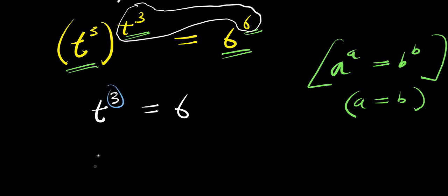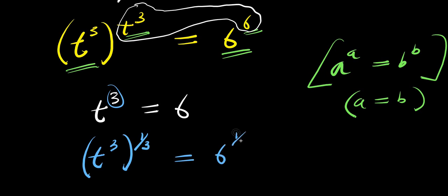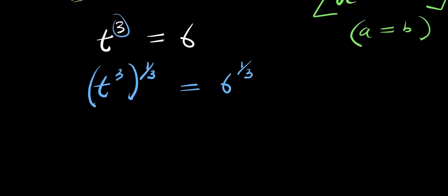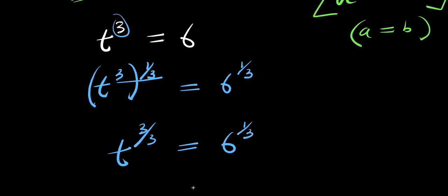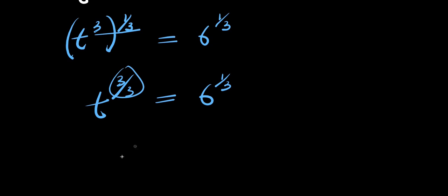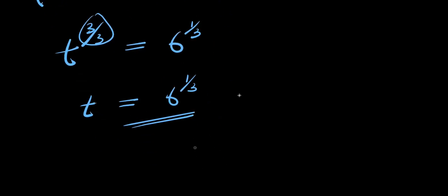So if that is the case, we can easily solve for t. By eliminating the cube, I raise both sides to the power of 1 over 3: t to the power of 3 raised to the power of 1 over 3 equals 6 raised to the power of 1 over 3. Multiplying the exponents on the left, I have t to the power of 3 times 1 over 3, which is 3 divided by 3, equals 6 to the power of 1 over 3. Since 3 divided by 3 is 1, we have t equals 6 to the power of 1 over 3. So this is our answer.